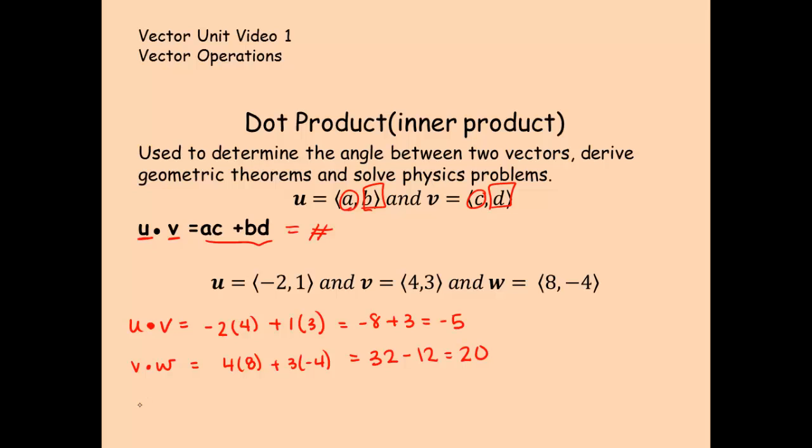Let's try just one last one. Let's try u dot w. And that would be negative two times eight plus one times negative four. Negative 16 minus four or negative 20. So these are the dot products. Again, the answer is a scalar. It's a regular number. It is not a vector. If your answer looks like a vector, it's going to be wrong.